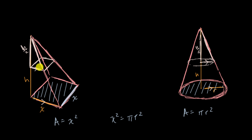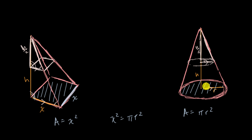Because these are parallel lines, this angle is congruent to that angle, and this angle is congruent to this angle — these are transversals across parallel lines, so they are corresponding angles. And of course, they share this angle at the apex in common. So the smaller triangle in either case is similar to the larger triangle.